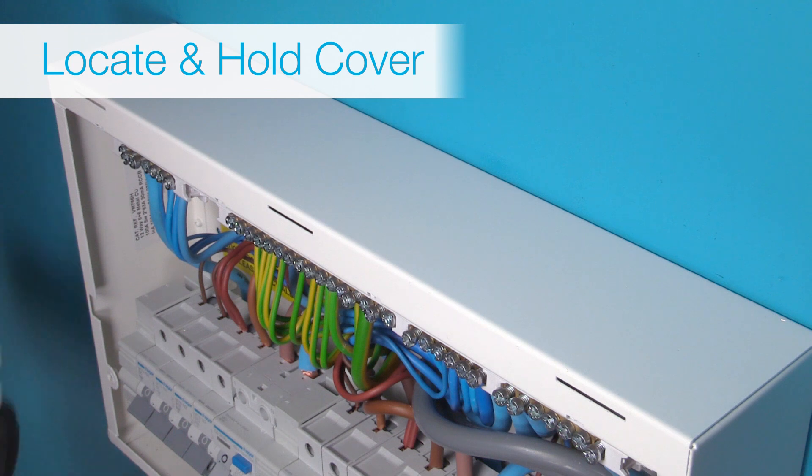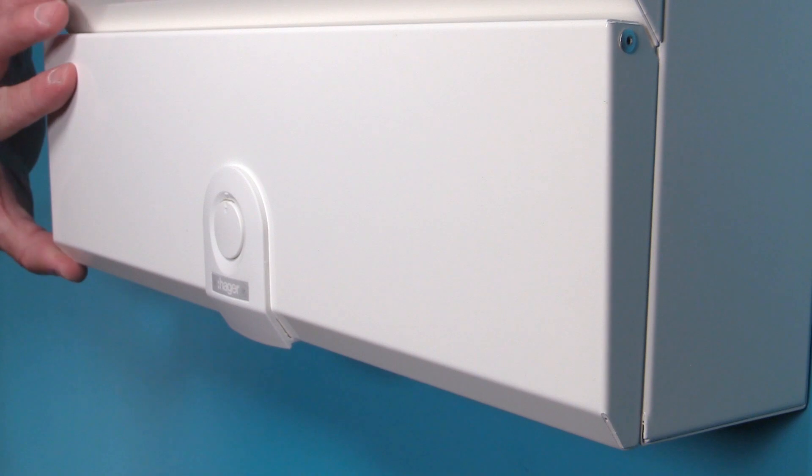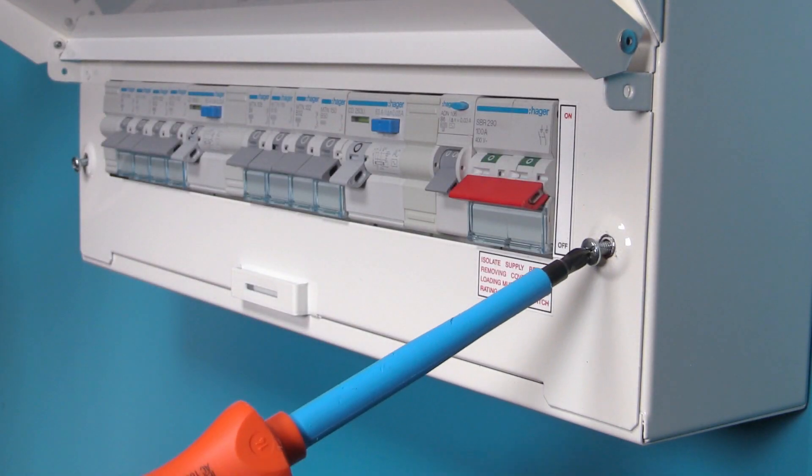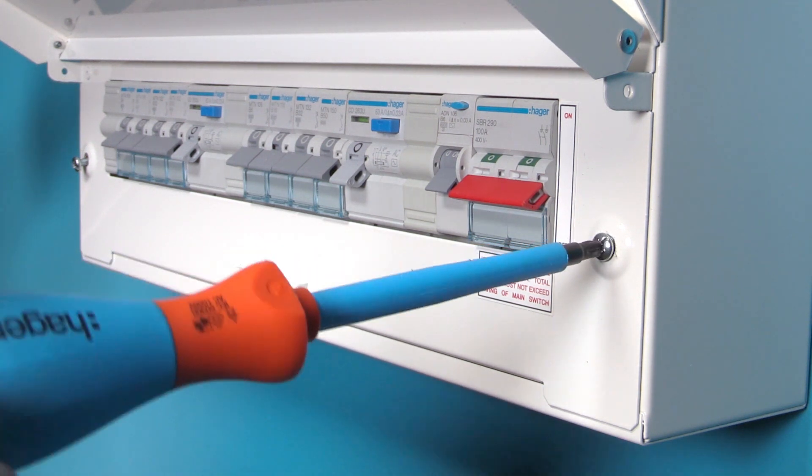Once all the devices have been installed, the locate and hold cover can be added. The top of the cover has three tabs to hold it in position whilst you secure it. The cover also has self-retained screws to further make the installation as easy as possible.